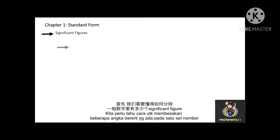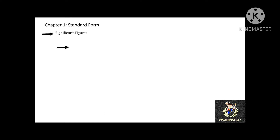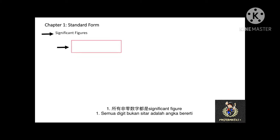And how to determine the number of significant figures. For example, all non-zero digits are significant. Therefore, 42 is 2 significant figures, and 42.42 is 4 significant figures.